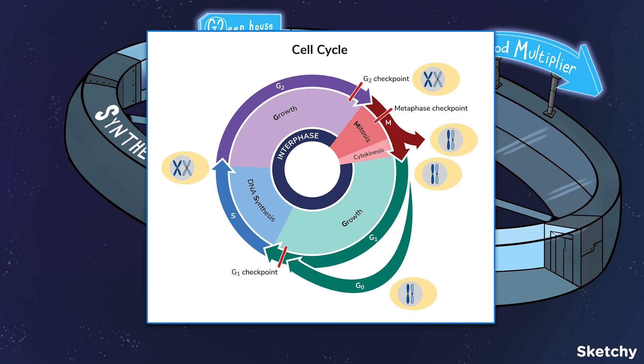A cell spends most of its life in interphase. Interphase is further divided into G1, S, and G2.